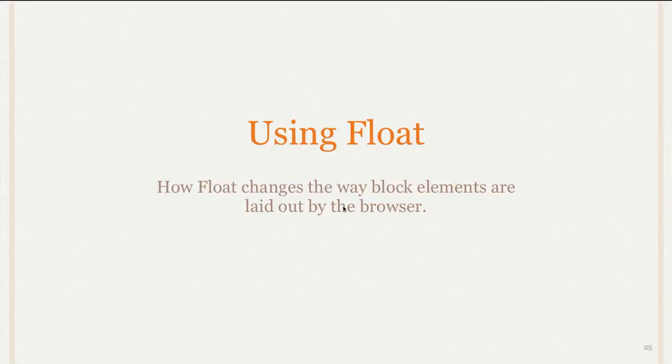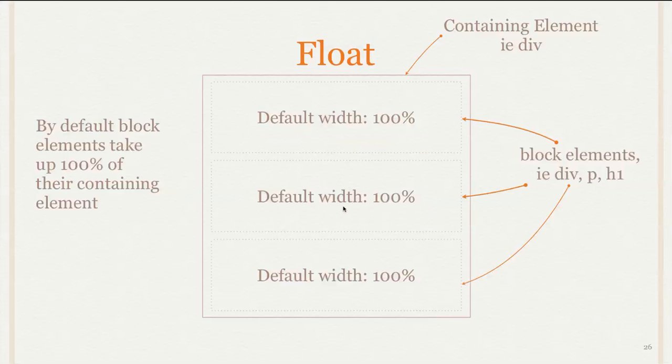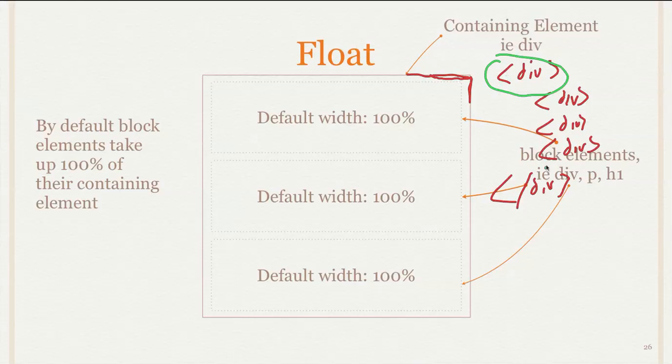So float is something that changes the way block elements are laid out by the browser. Normally when you have a block level element, it just fills the amount of space it can within its containing element. Meaning there's an element here represented by this dark line that is inside the other ones. In often cases you might have a div here and then we have three divs on the inside like that. So this div here is a containing element and these are inside of it.